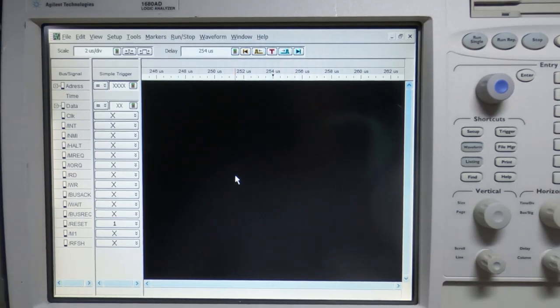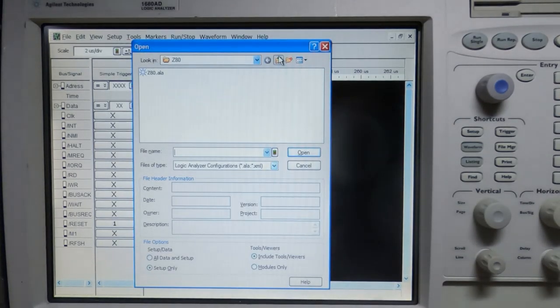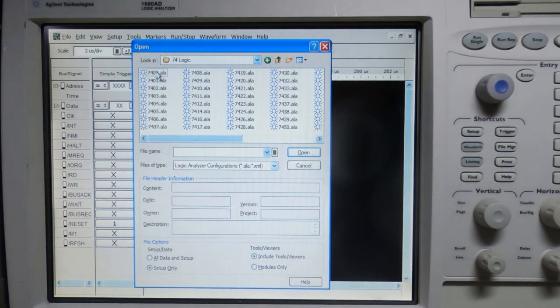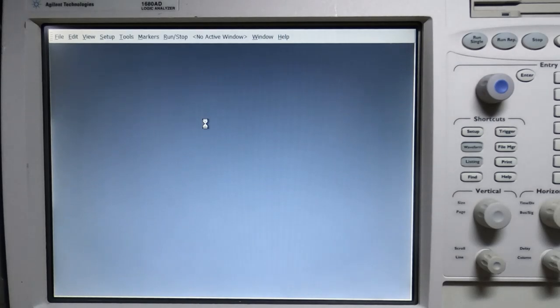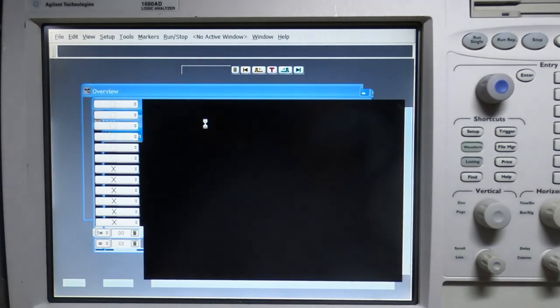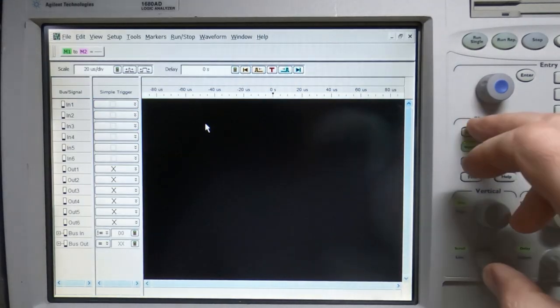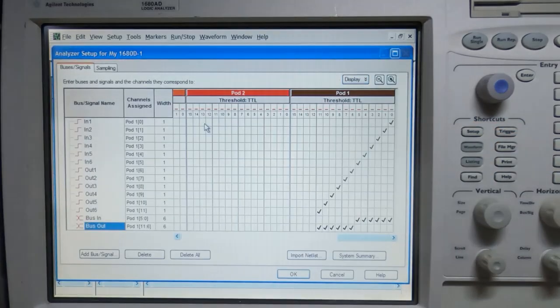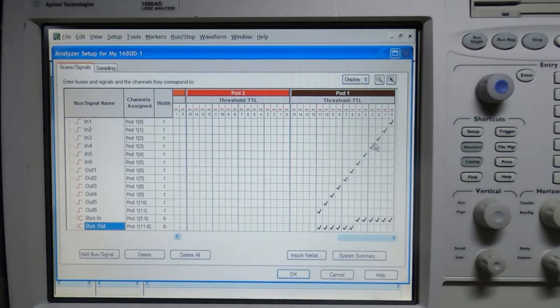And it's just really a case of setting up the analyzer so that each of the required lines are available on the pods. And then you can just connect the pods to a test clip, clip that onto the board and use it that way. But for testing 74 series, if you want to use a logic analyzer, you can do that as well. So if we open a specific file, and in this case we'll open, for example, a 7404.